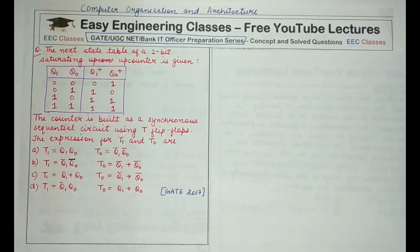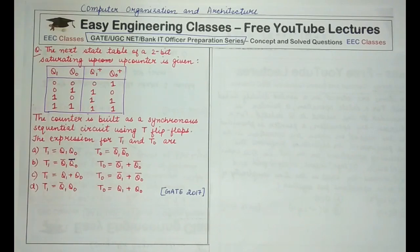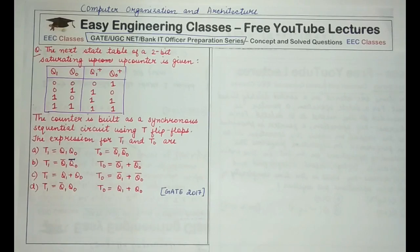The next state table of a two-bit saturating up counter is given. The counter is built as a synchronous sequential circuit using T flip-flops. A piece of advice: sometimes students leave a question by reading only the first few lines. You may not be aware of what a saturating up counter is, but you may know the basic function of a T flip-flop. Please always read the complete question as well as all the options.